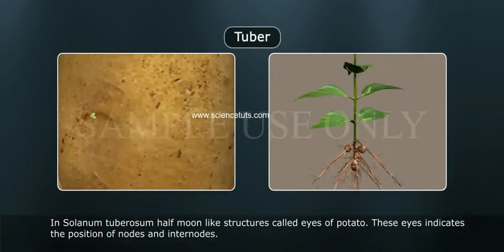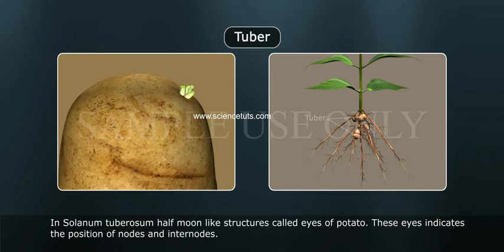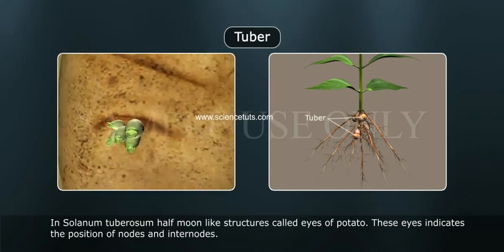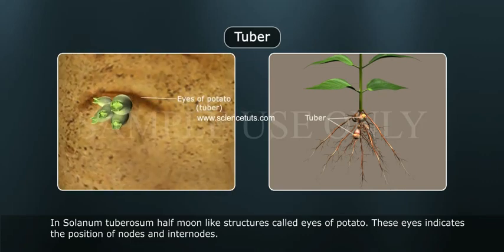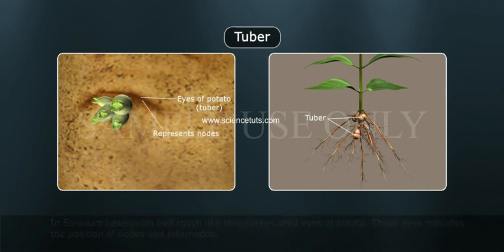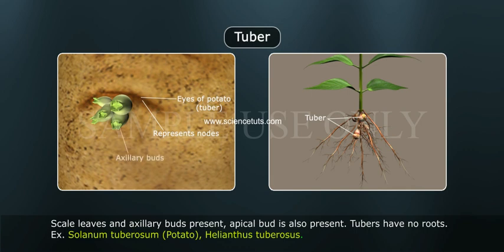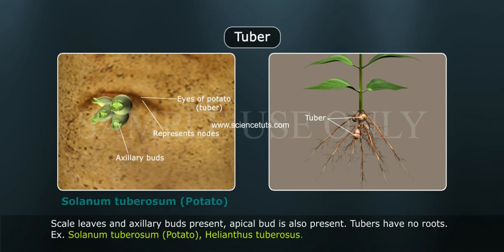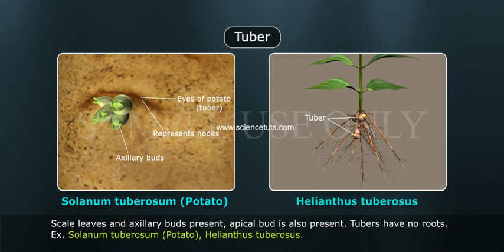Tuber: in Solanum tuberosum, the half-moon-like structures are called eyes of potato. These eyes indicate the position of nodes and internodes. Scaly leaves and axillary buds are present, along with an apical bud. Tubers have no roots. Examples include Solanum tuberosum (potato) and Helianthus tuberosus.